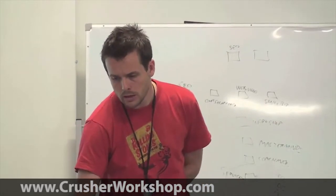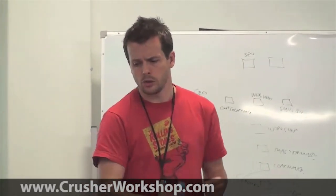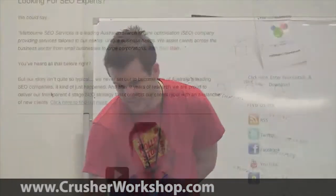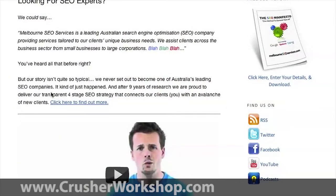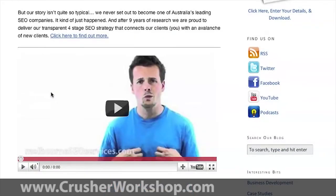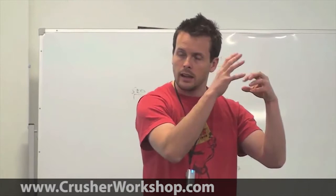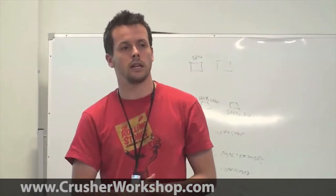Then, you want to have a page that tells your story. I try and really position myself a little bit differently. You really want to avoid being the 'me too' type marketer. For example, we could say: 'Melbourne SEO Services is the leading Australian search engine optimisation company providing services tailored to your clients' unique business needs. We assist them across business sectors from small to large corporations.' You've heard all this before, right? But our story isn't quite so typical. We never set out to become one of Australia's leading SEO companies — it kind of just happened. I go through and tell that story about how we started out in the stock market space, and it was only because people started coming to us saying 'how are you doing what you're doing' that we ended up falling into the SEO space.